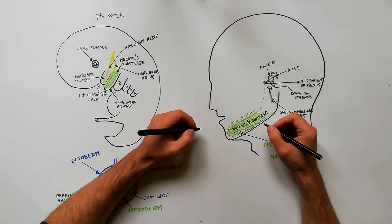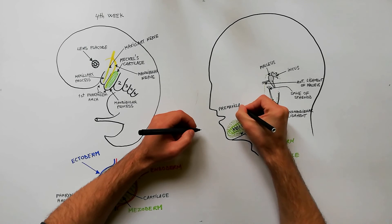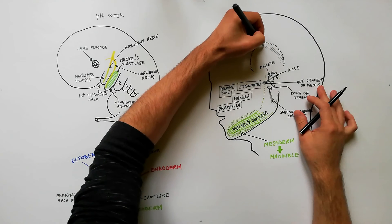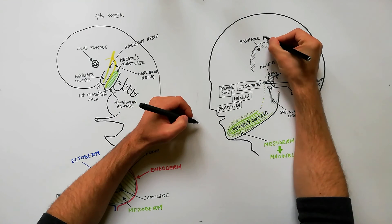The mesenchyme of the maxillary process of the first pharyngeal arch gives rise to premaxilla, maxilla, zygomatic bone, palatine bone and squamous part of temporal bone.